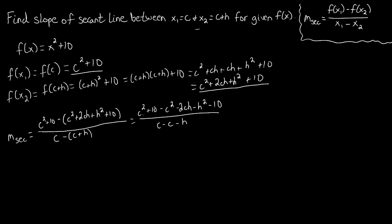Let's go through the numerator first and see what we can cancel out. We're going to be subtracting c squared minus c squared, which leaves us with zero, so we can leave those terms off. And we also get 10 minus 10, so we have some things there that we got rid of.